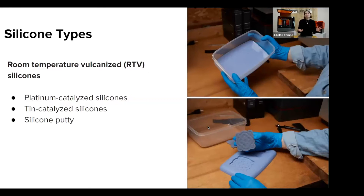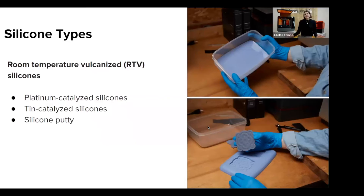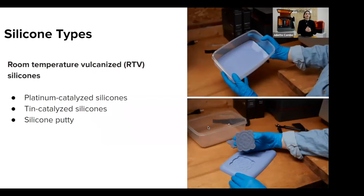Within RTV silicones, we consider three types. Platinum-catalyzed silicones are higher cost, but superior in terms of long-term dimensional stability and low shrinkage. Then there are tin-catalyzed silicones, which have lower cost but are less stable over time and tend to have a higher shrinkage rate. And then there's also silicone putty, a two-part putty in which the components are blended together in full volume. It's worth noting that platinum-catalyzed silicones are quite popular but have concerns around reacting with 3D printed molds — we'll discuss that later in the presentation.